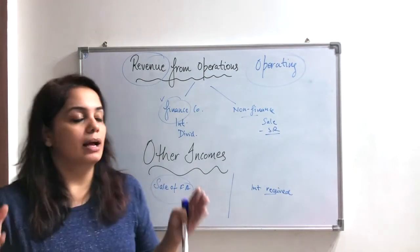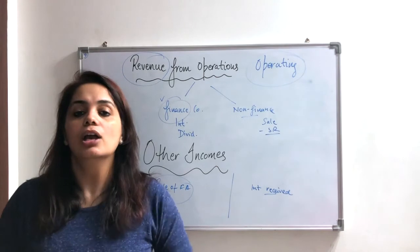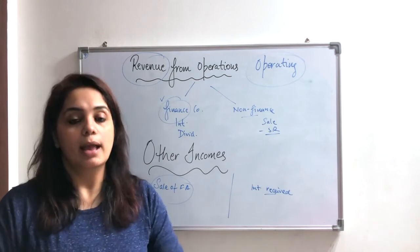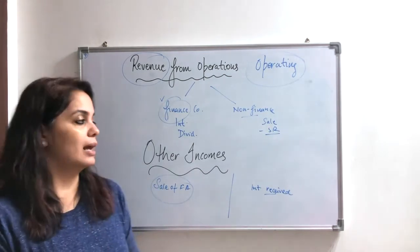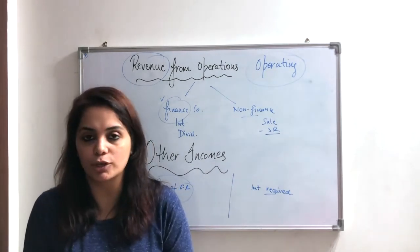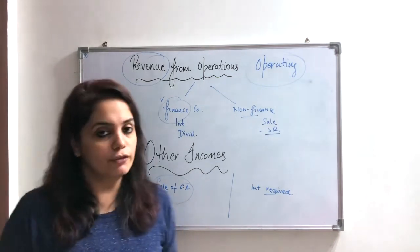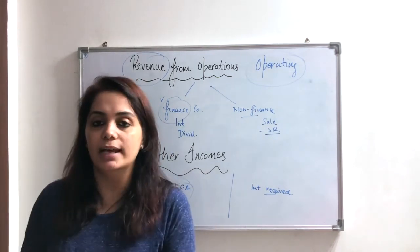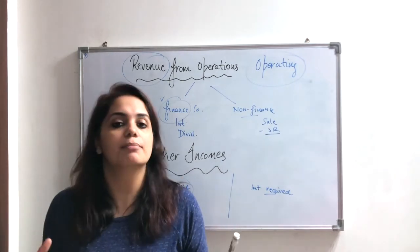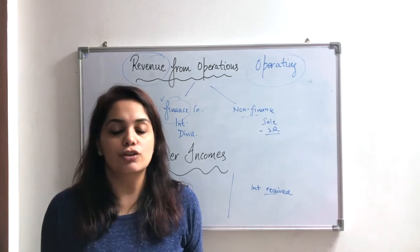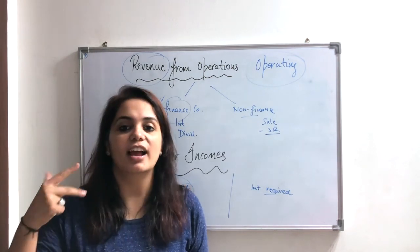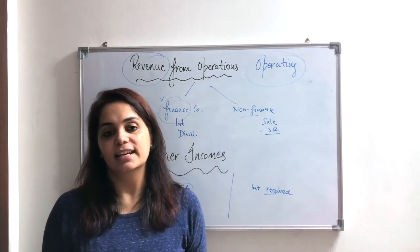Very easy! Now revenue from operations and other incomes — you have understood. If any company's case comes and any heading comes, you can easily include it. I have only told you the basic details — the concept of revenue from operations and other incomes. That's all for this video. In the next video I will discuss expenses as part of the statement of profit and loss account. Thank you so much for watching. Do not forget to like, share and subscribe to my channel Commerce Minded.